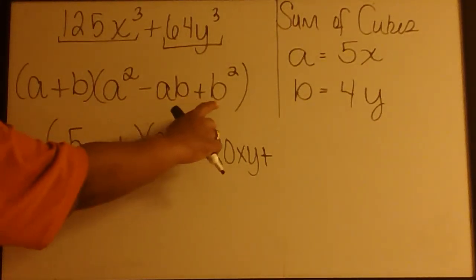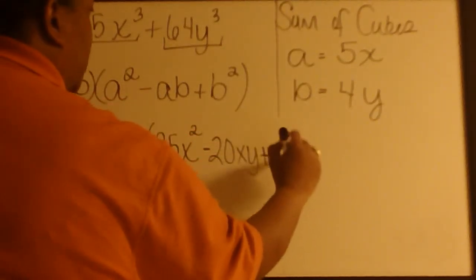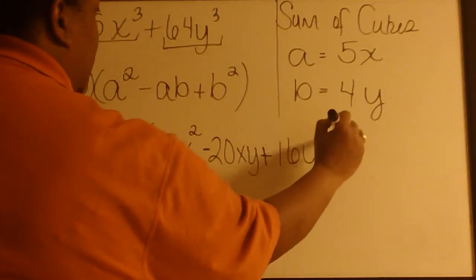Then we're told to square B, which means we need to square the 4 and the Y, which gives us 16Y squared.